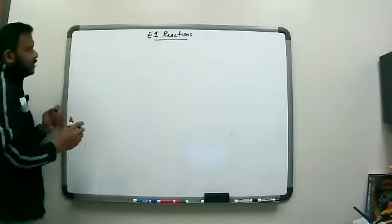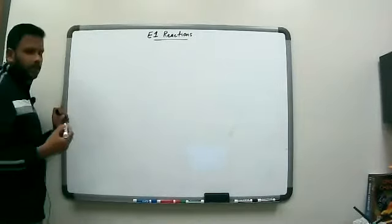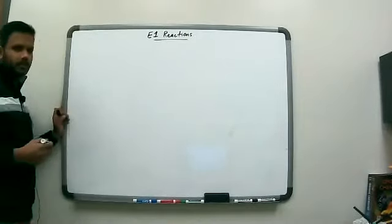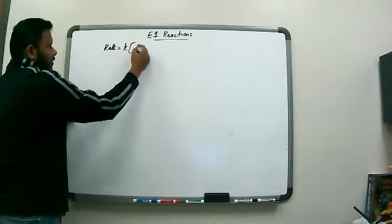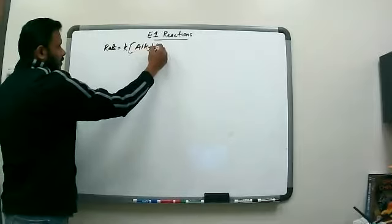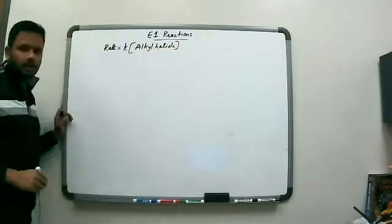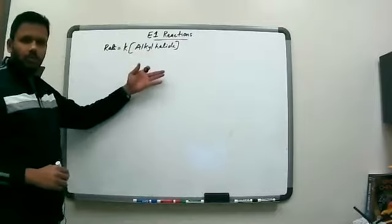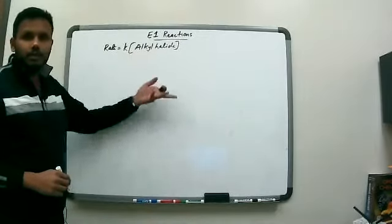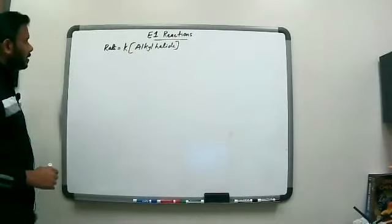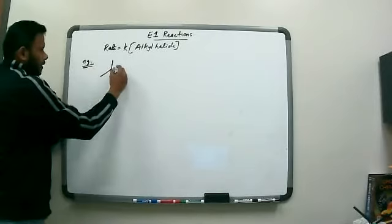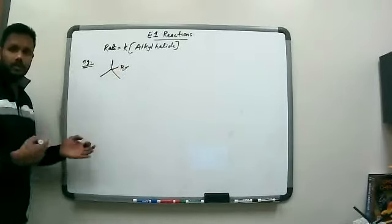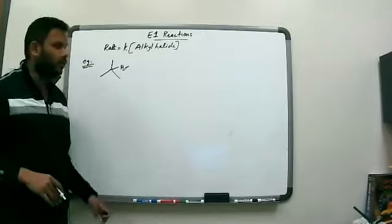For E1 reactions, we will start with the same examples we talked about earlier. The rate of an E1 reaction again just depends on the concentration of the alkyl halide. The rate law is identical to an SN1 reaction. So we'll go back to one or two examples that we used in the SN1 video and see how the E1 products are formed.